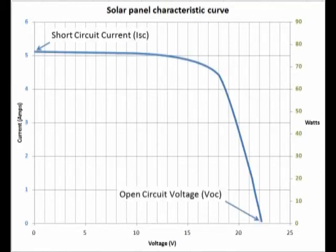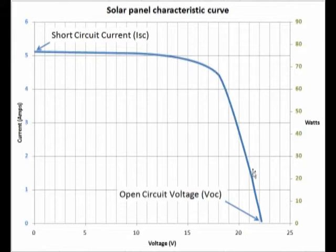Here's what the curve looks like. The solar panel characteristic curve starts at the short circuit current level of slightly over 5 amps, stays steady as voltage increases, but then reaches a point where it starts to tail off, dropping down to where there is no current flow and you end up at the open circuit voltage of a little above 22 volts.